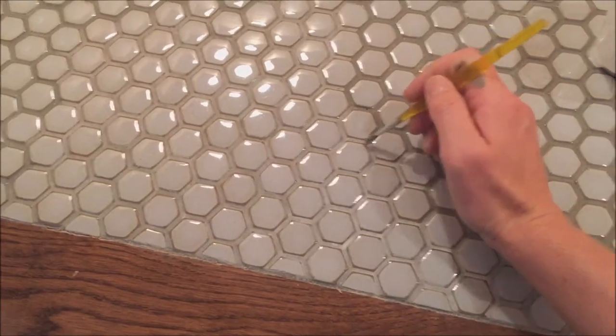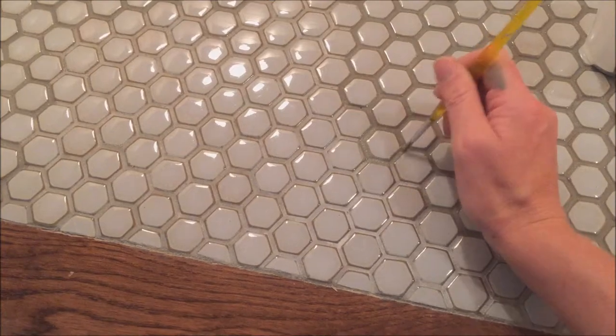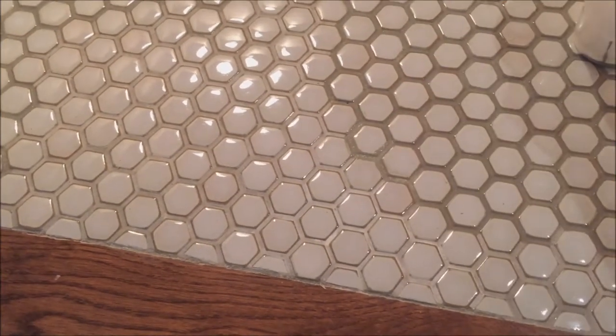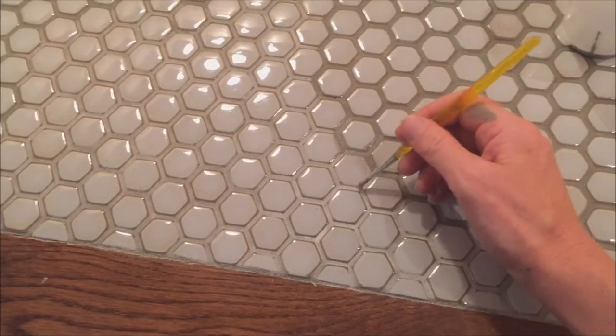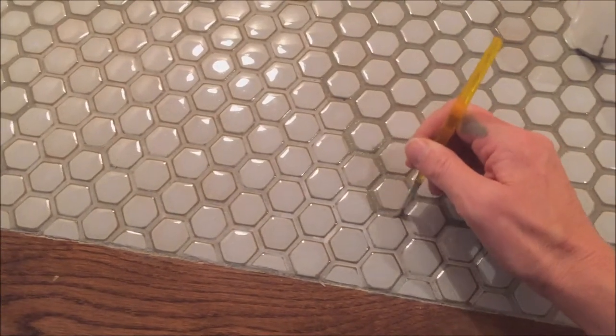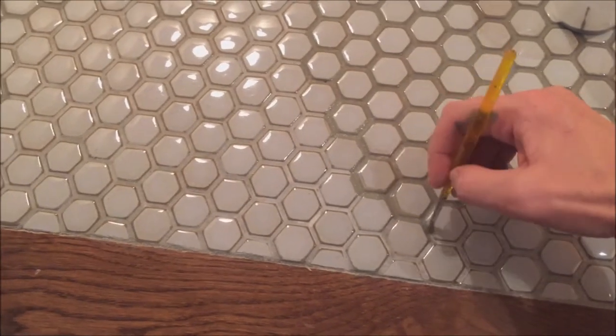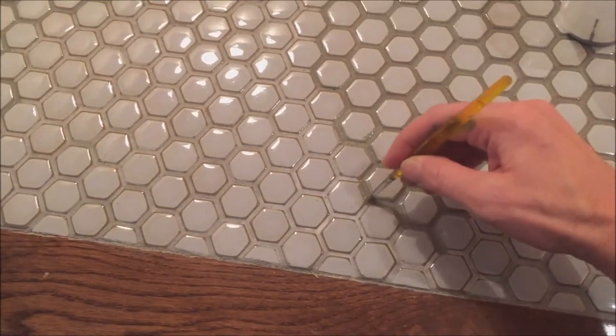You paint the grout lines, and I would say don't even worry about getting it on the tile because it comes off very easily. You just don't want to do such a big section that the paint is completely dry. I would say no more than two or three minutes.